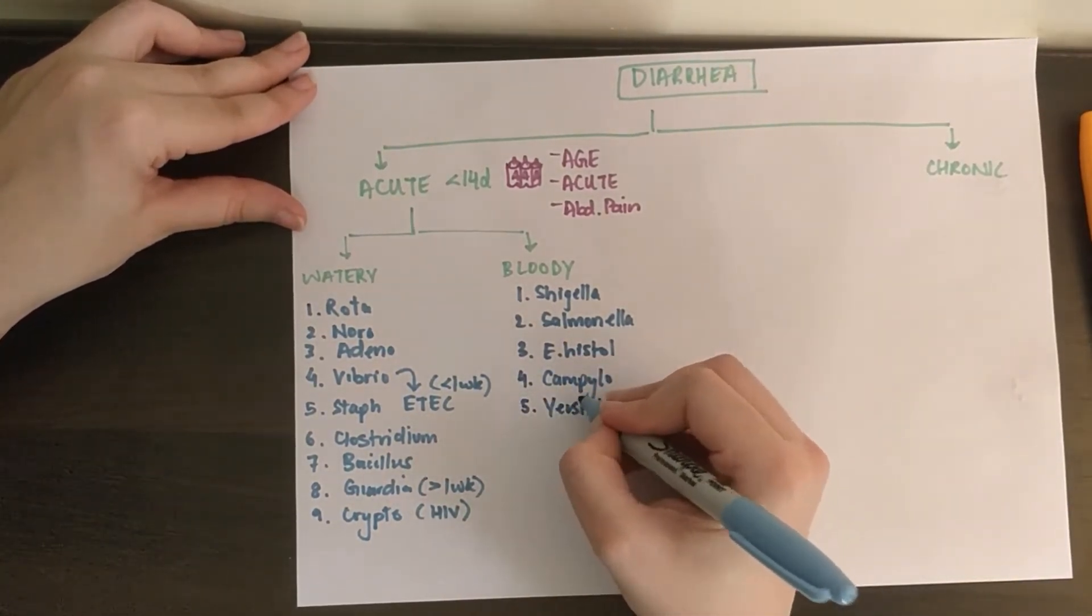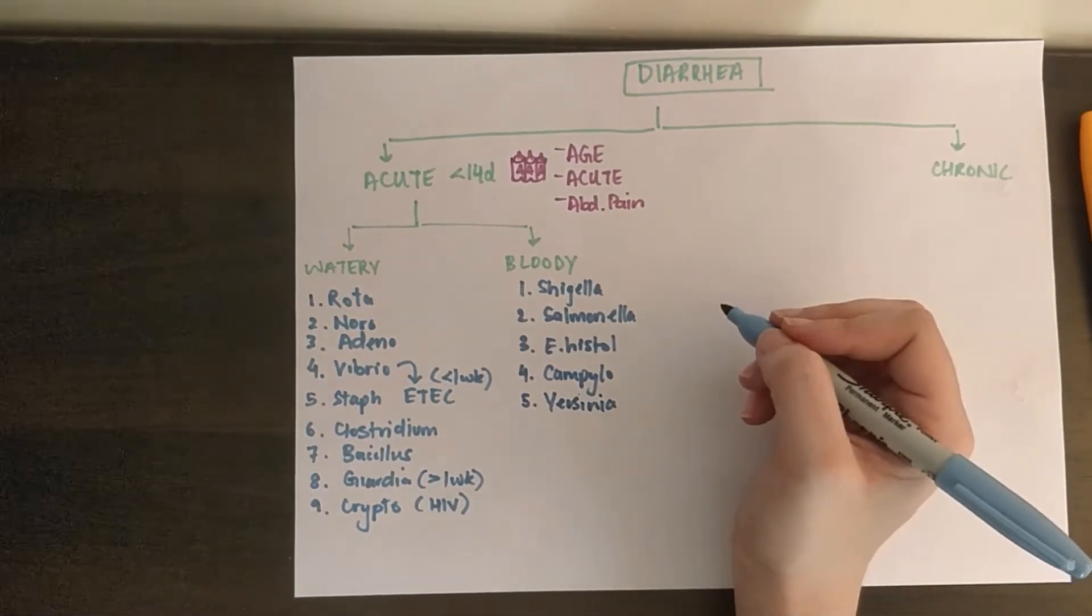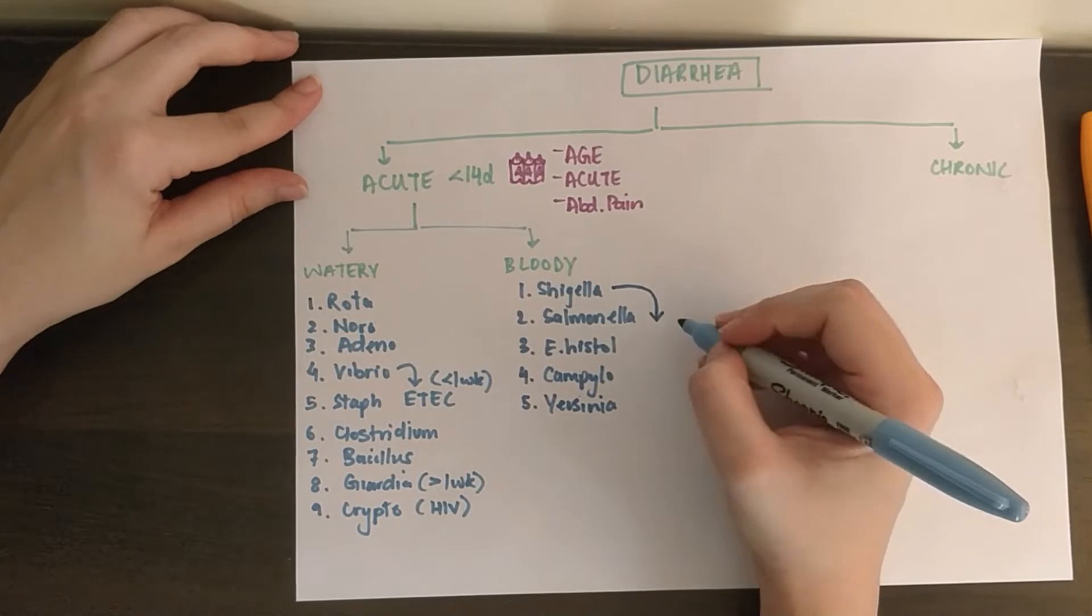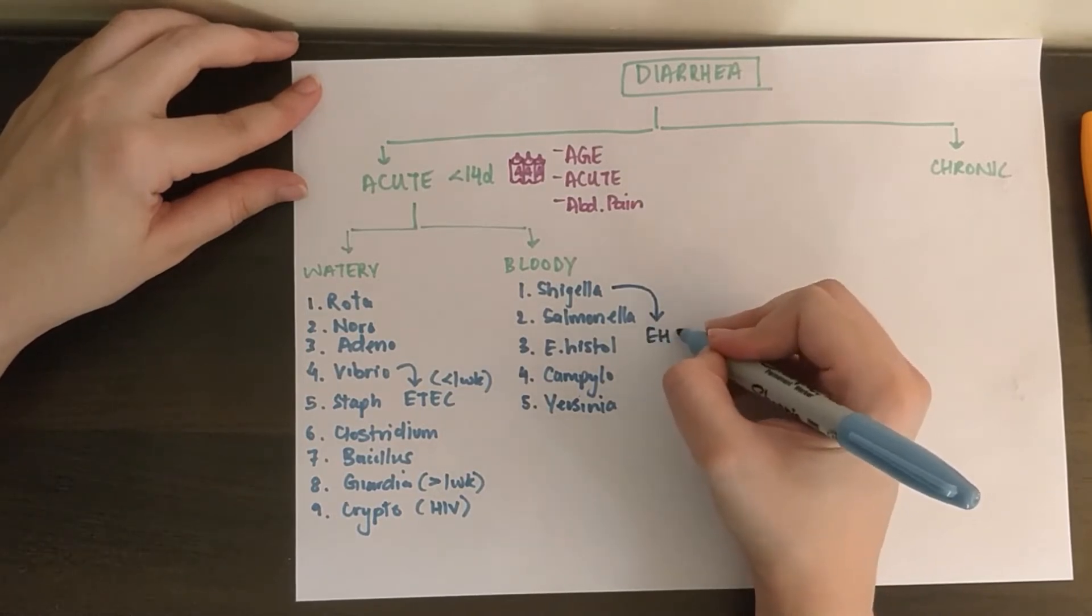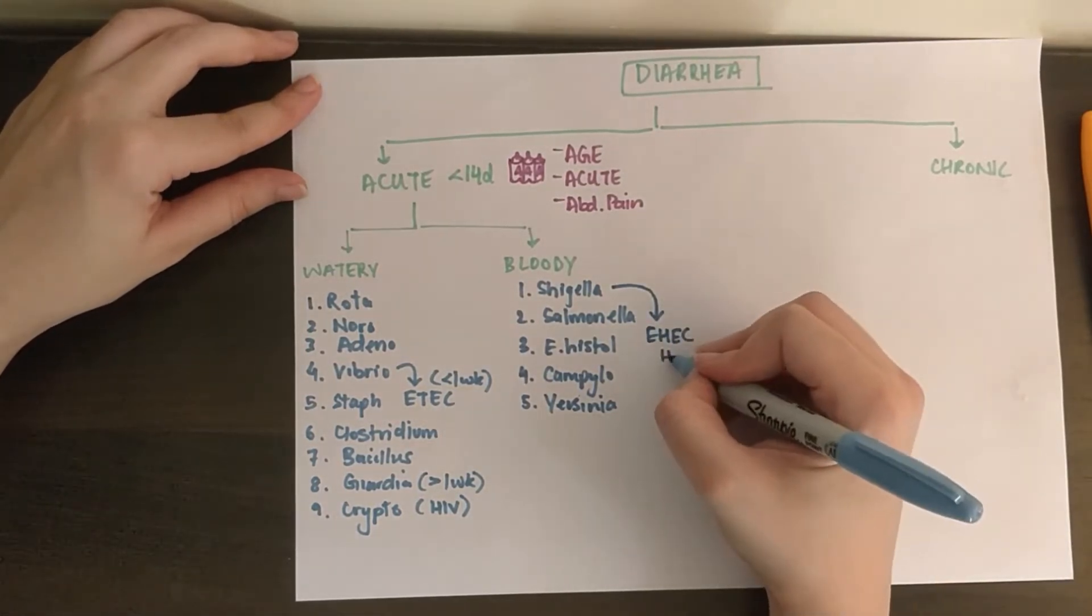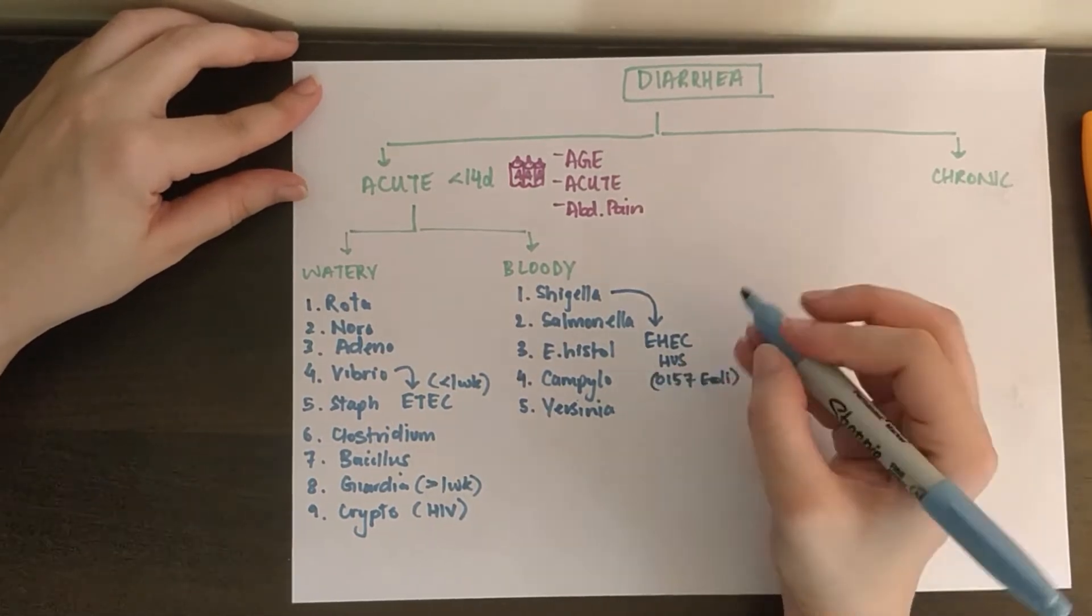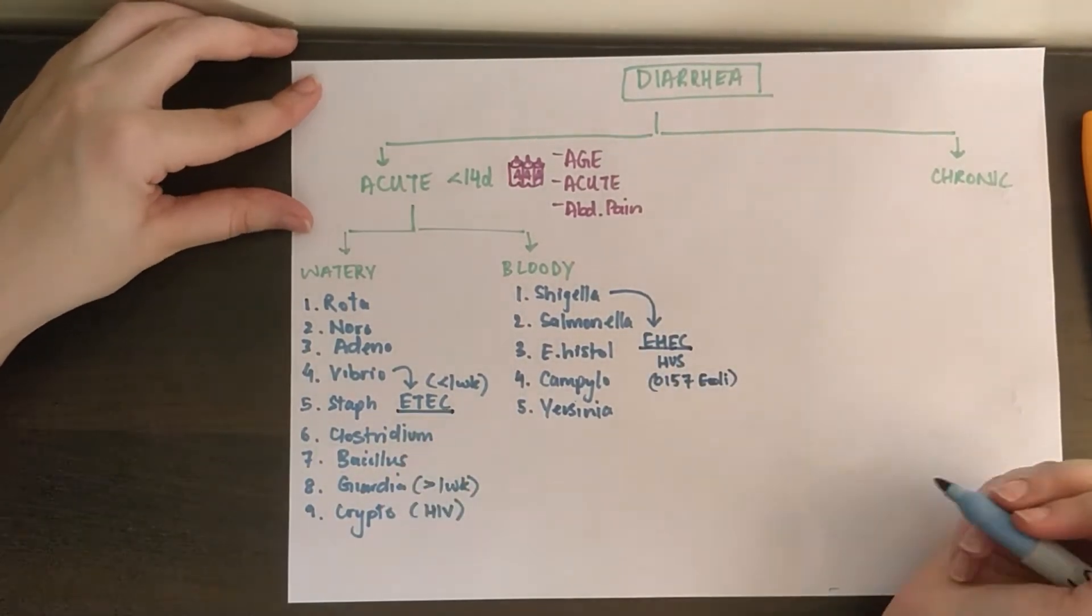Now again, Shigella has a little brother too, but not really, by the way of enterohemorrhagic E. coli, which causes hemolytic uremic syndrome. Bloody diarrhea is seen in kids. It's Shigella's little brother as it produces a shiga-like toxin, whereas ETEC produces a cholera-like toxin.